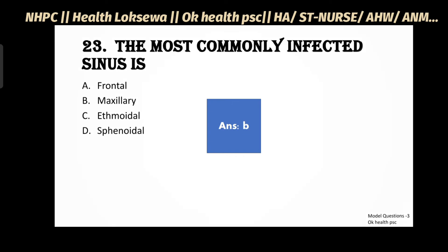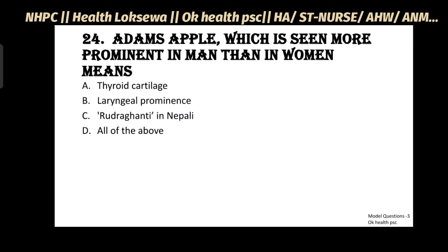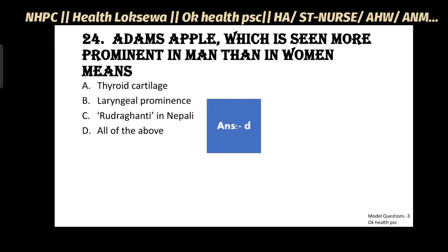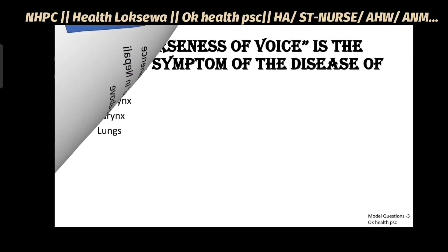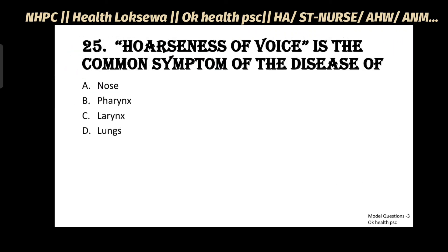Question No.24: Adam's apple, which is seen more prominently in men than women, refers to - Thyroid Cartilage, Laryngeal Prominence, Rudraghanti (in Nepali), All of the Above. Answer: D - All of the Above.